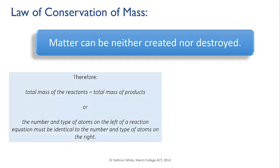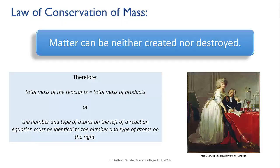All that can happen is that the atoms are rearranged. This law came about from the work of many early chemists, but it was the Frenchman Antoine Lavoisier, along with his wife Marianne, who most conclusively showed it to be true in the late 1700s. It was only by some excruciatingly precise and careful lab work, and the use of the best technology of the day — in particular accurate balances — that they were able to prove this law conclusively.